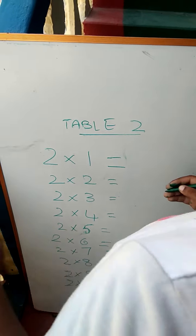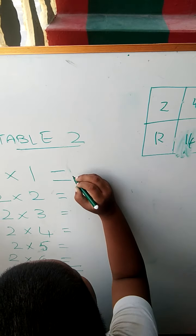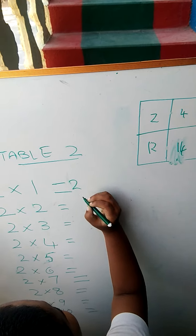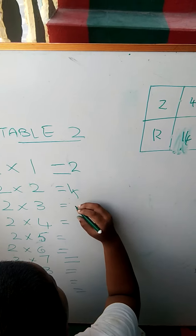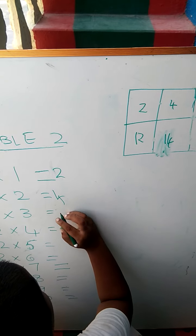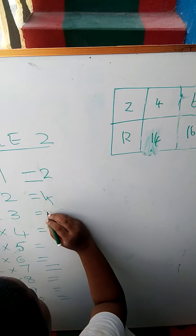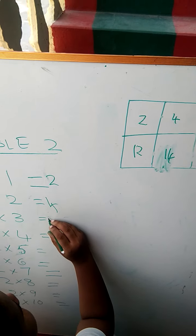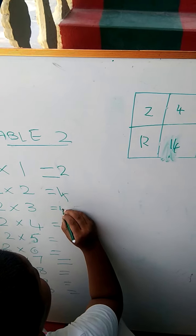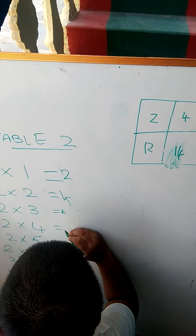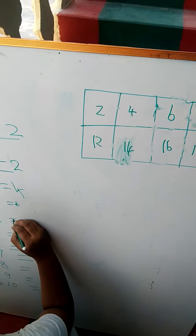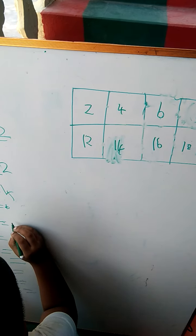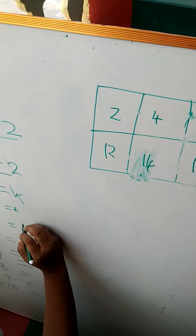So, two ones are? Two. Two twos are? Four. Two threes are? Six. Right, six. Two fours are? Six. No, after six. This one. Eight, eight.